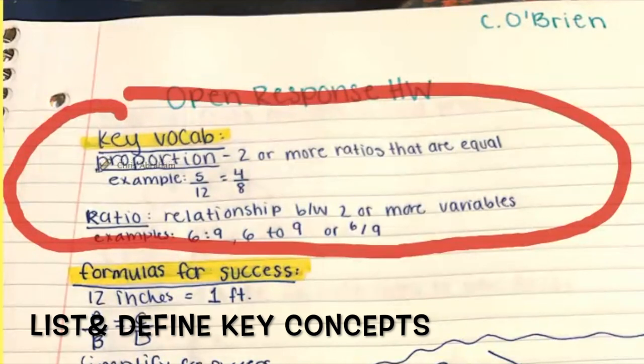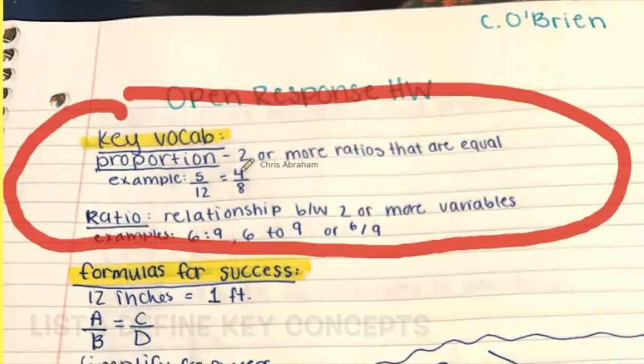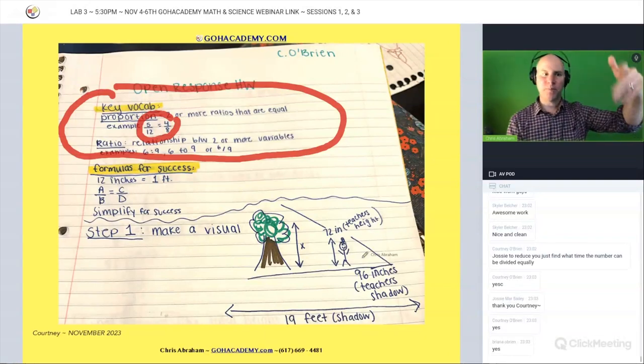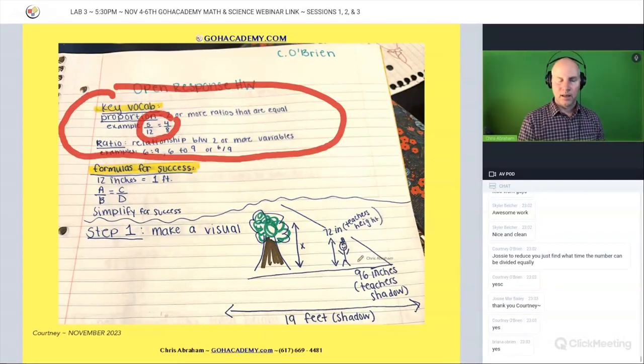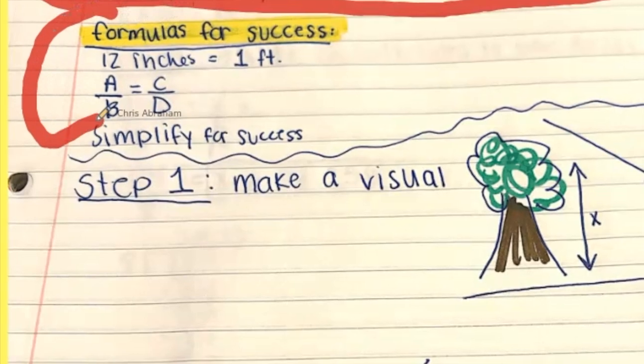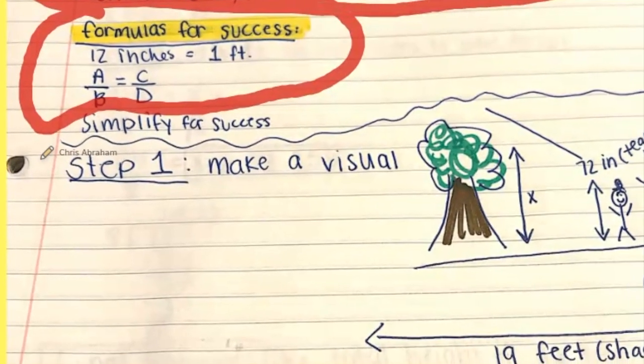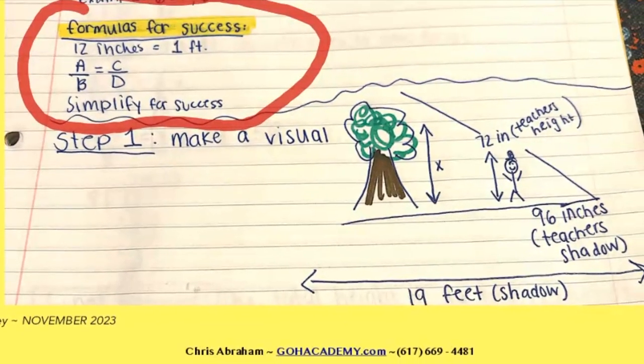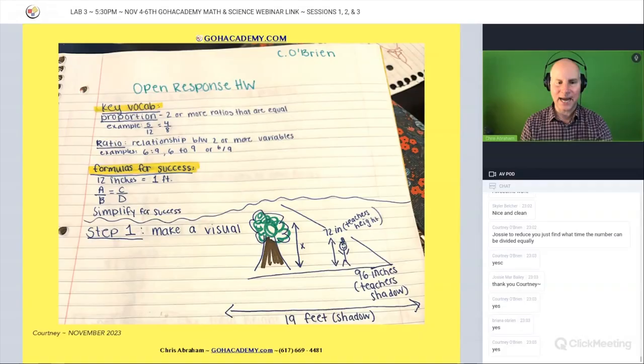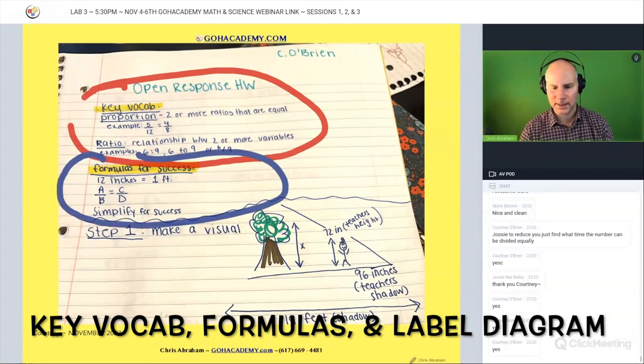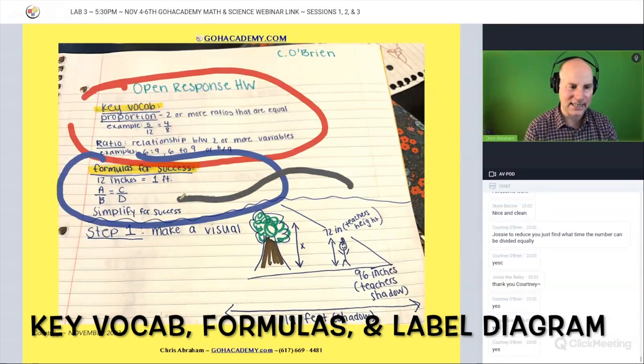We've got definitions of proportion and ratio. Again, Courtney used the stuff from the question, so your example should be the proportion from the question. We have formulas, and simplify for success. I like the formula there, nice and clean. Then finally we have the diagram. We have key vocabulary, it has its own section. We have some key formulas, one or two formulas, and then we have that nice clean diagram. Step one: make a visual.